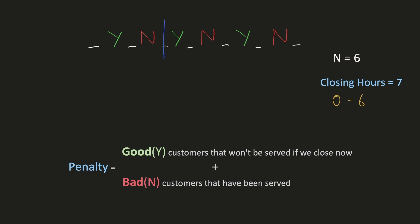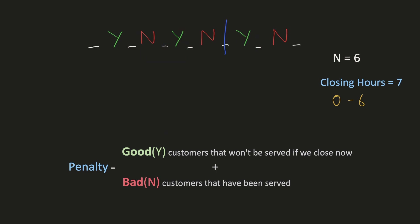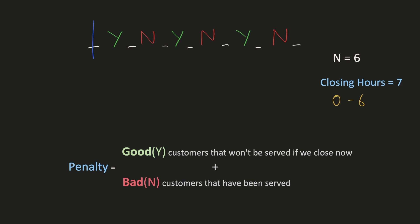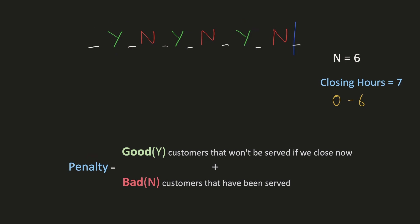For example, if we close the shop at the second hour, we will be missing out on serving these two good customers, and we would have also served one bad customer prior to closing — hence the penalty would be 3. If we close the shop at the fifth hour, we will be missing out on serving one good customer and would have already served two bad customers, so the penalty is 3. If we close at the 0th hour, we miss all good customers but serve no bad customers — penalty is 3. If we close at the sixth hour, we won't miss any good customer.